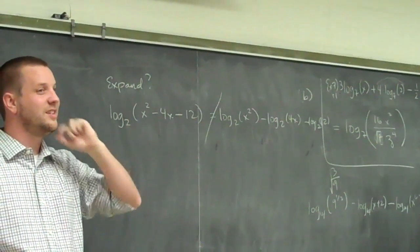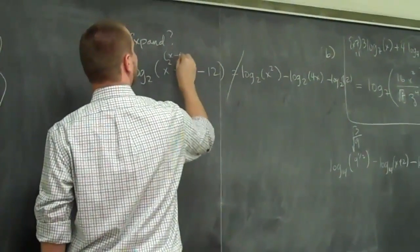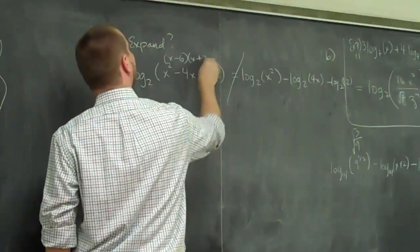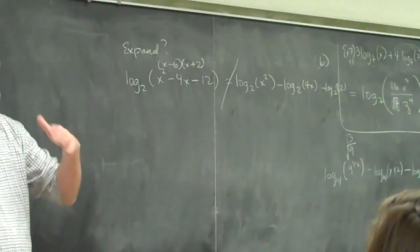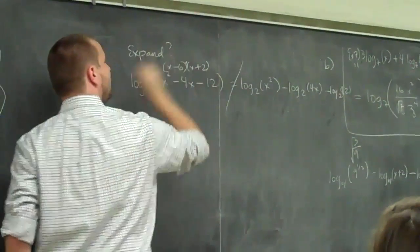Could it be factored? How does this thing factor? x minus 6 times x plus 2. And if I factor it, doesn't that turn that into a product now? And can I split that multiplication out?